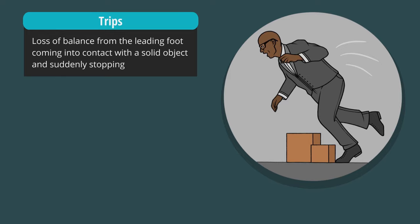Trips are a loss of balance from the leading foot coming into contact with a solid object and suddenly stopping. The upper body is thrown forward as you fall.